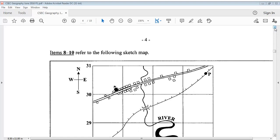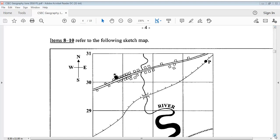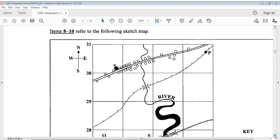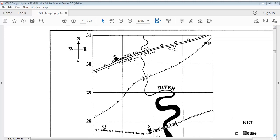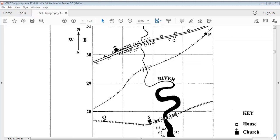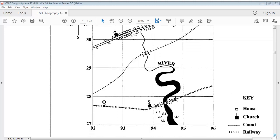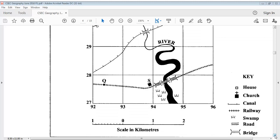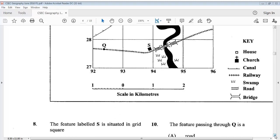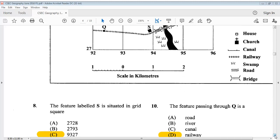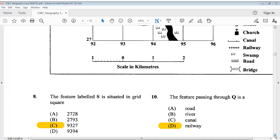Items 8 to 10 refer to the following sketch map. Take a look at the sketch map. Question 8 says, the feature labeled S is situated in grid square. You can pause it and go back to look at it.